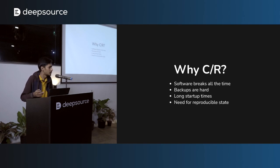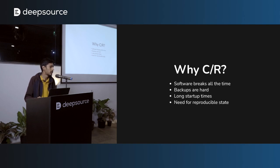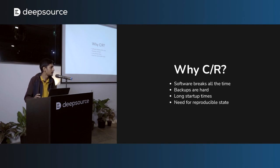So why checkpoint restore? The first and most obvious reason is we're all human, we all make mistakes. Somebody pushes a commit and boom, dev is down. Software breaks all the time. Being able to checkpoint your environments consistently and regularly lets you bring them back up immediately in the case of any downtime — you don't have to wait on other people for a fix. You can straight up spin up the previous checkpoint and you're good to go.